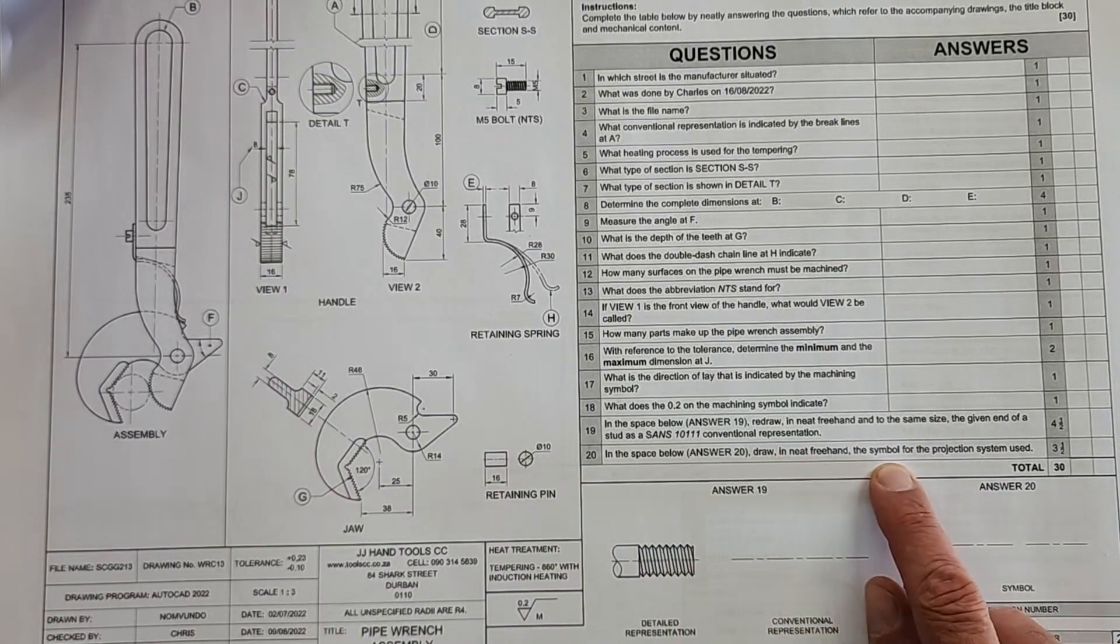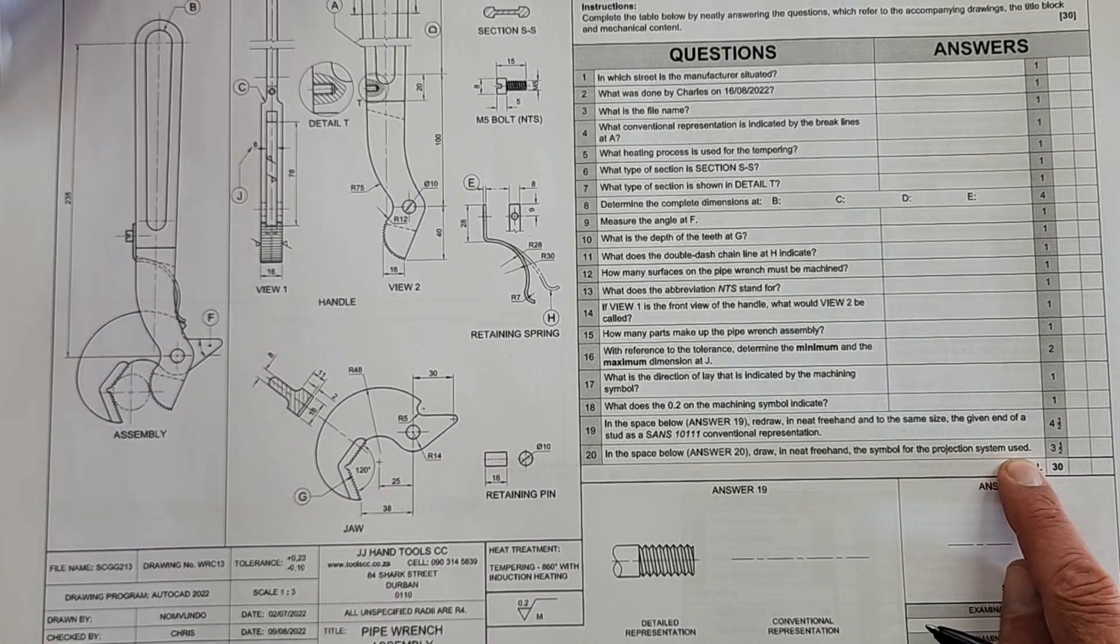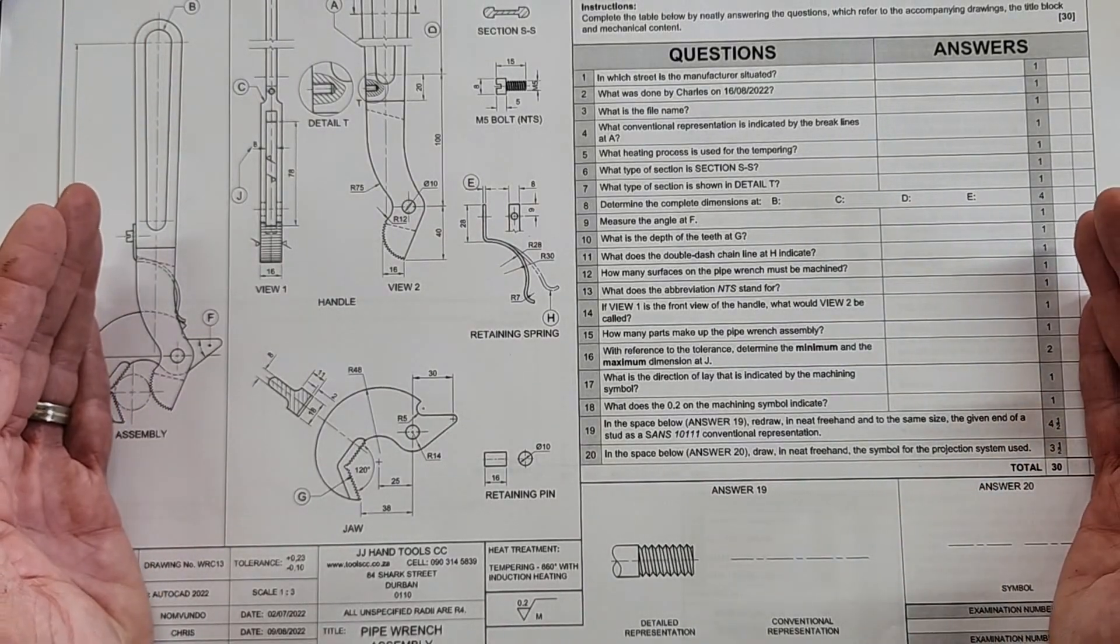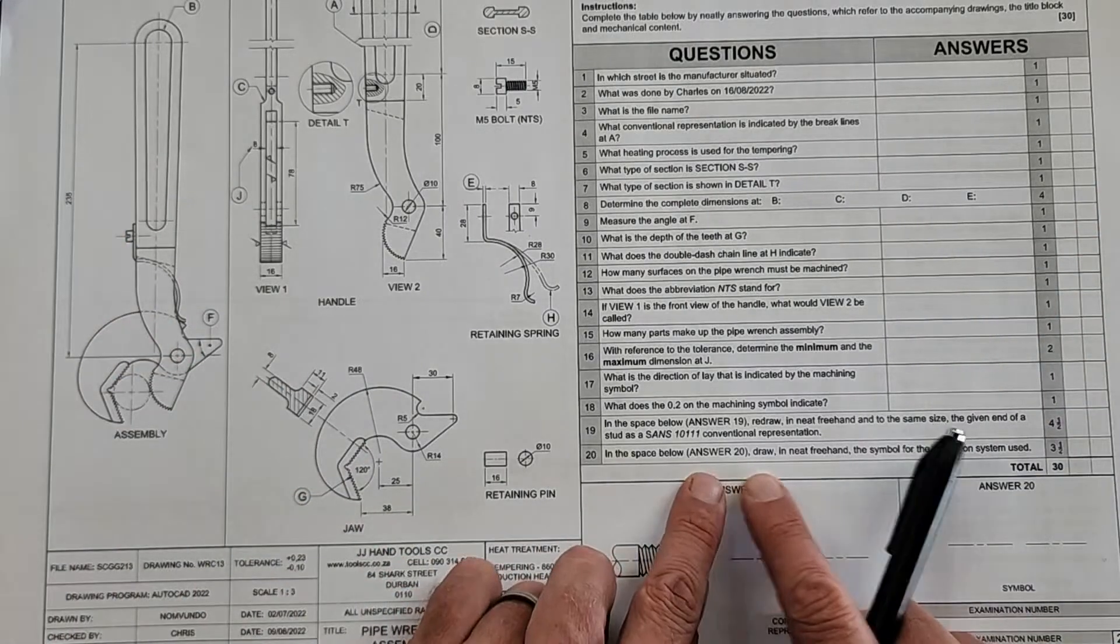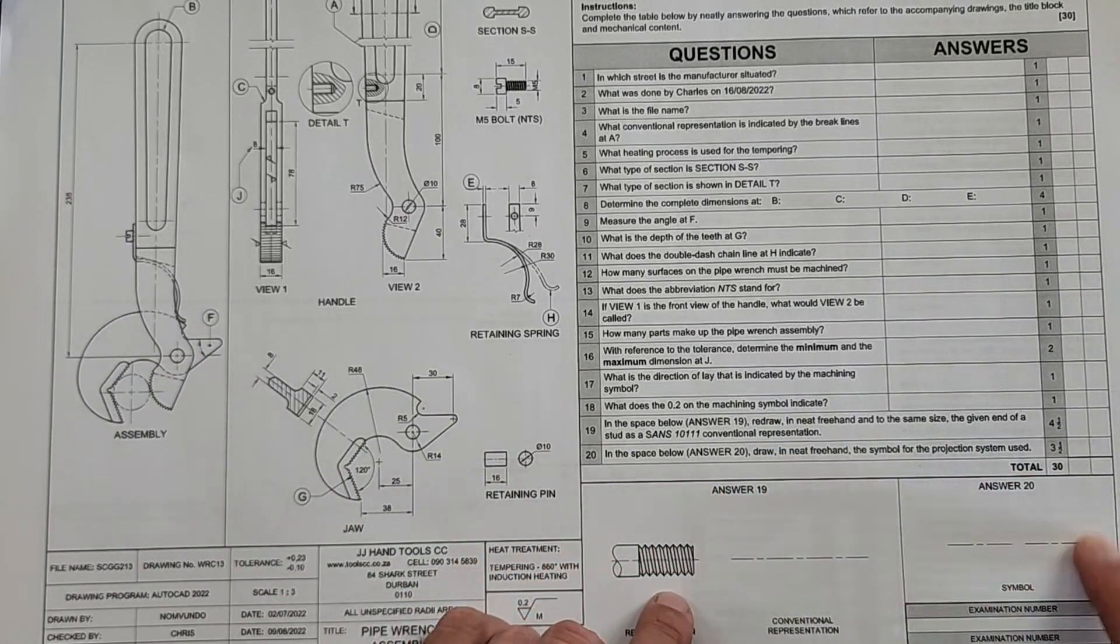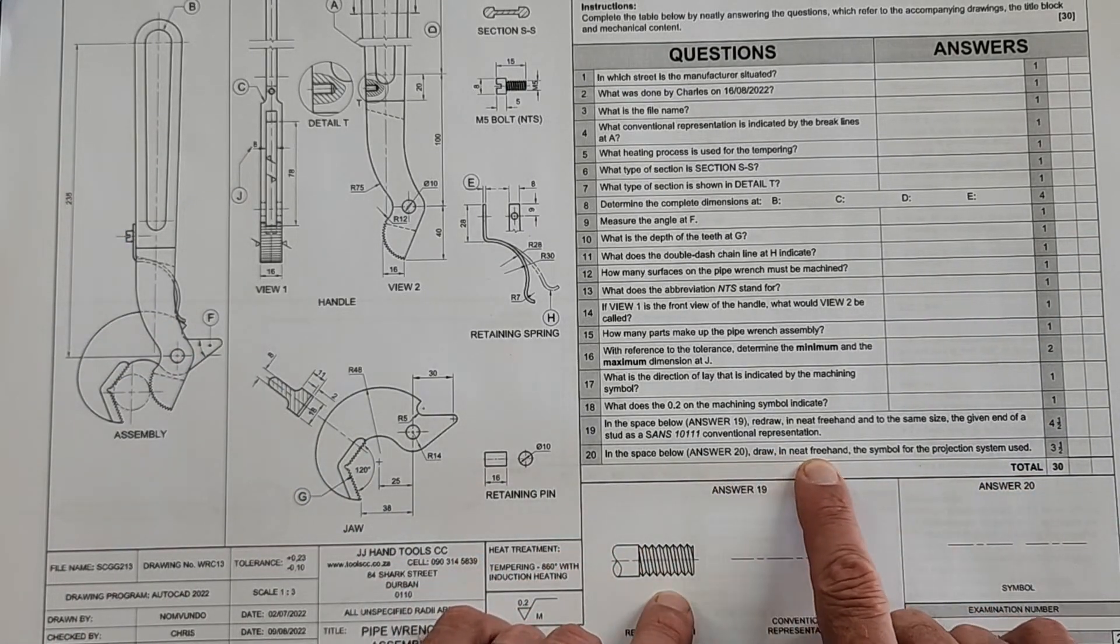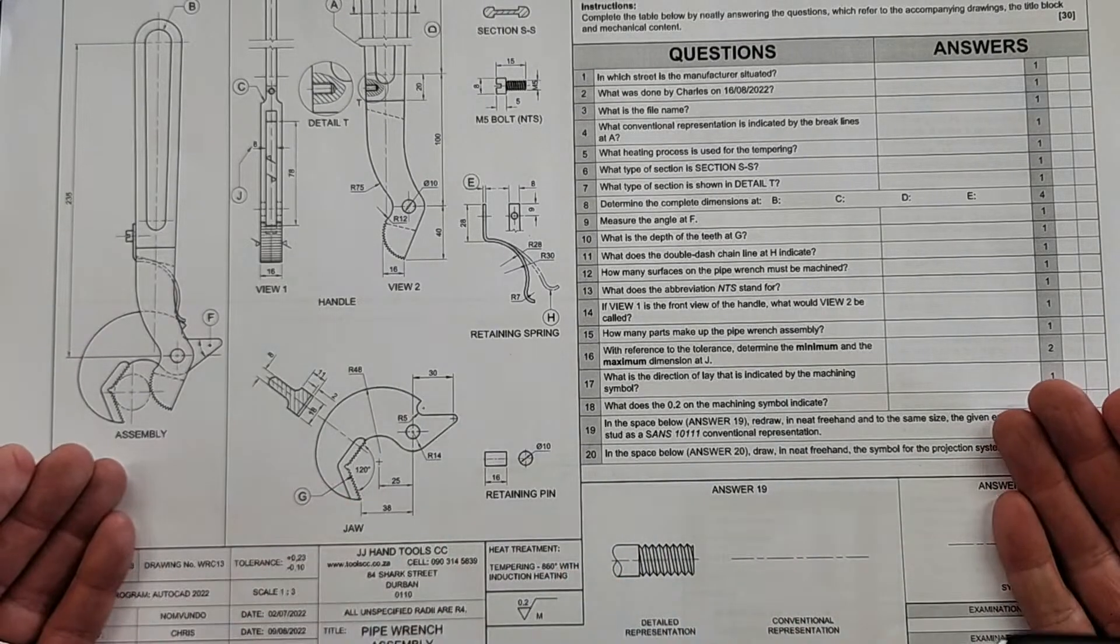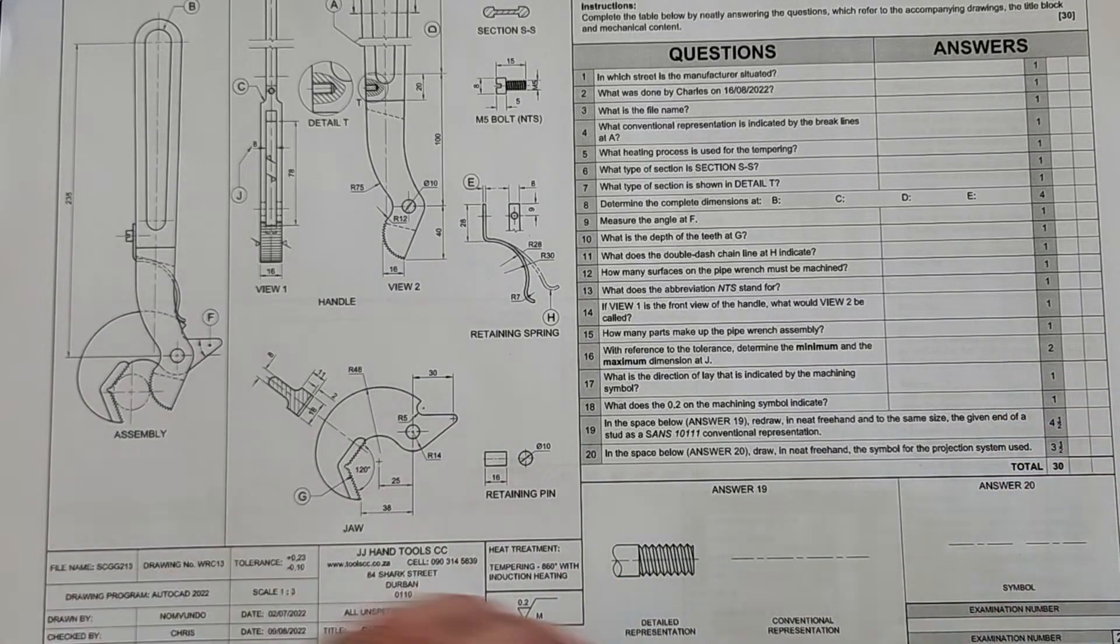The last question on this one actually asked it again: in this space below, draw in neat freehand the symbol for the projection system used. You have to remember that Paper 2 is going to be third angle orthographic projection and this symbol you have to draw down here and it must be in freehand. So take note on the freehand request, but sometimes learners just are blank and they can't remember this projection symbol.